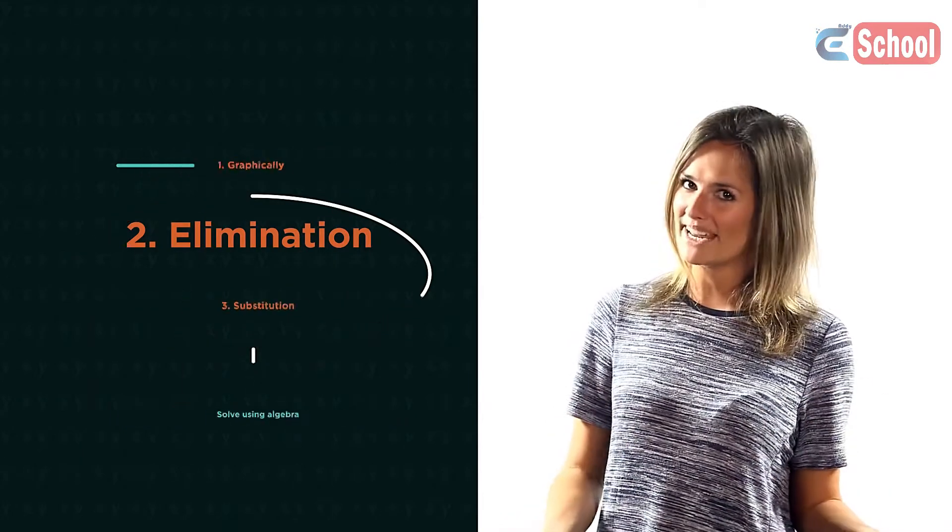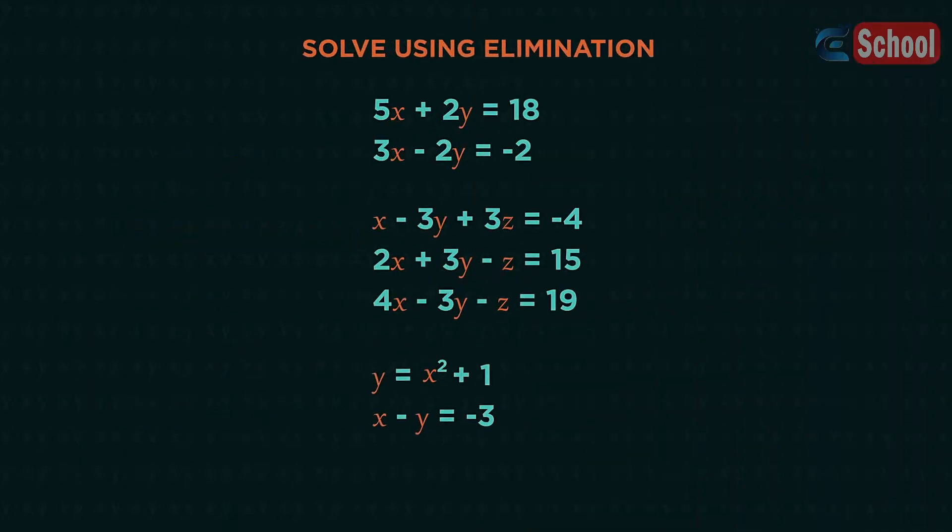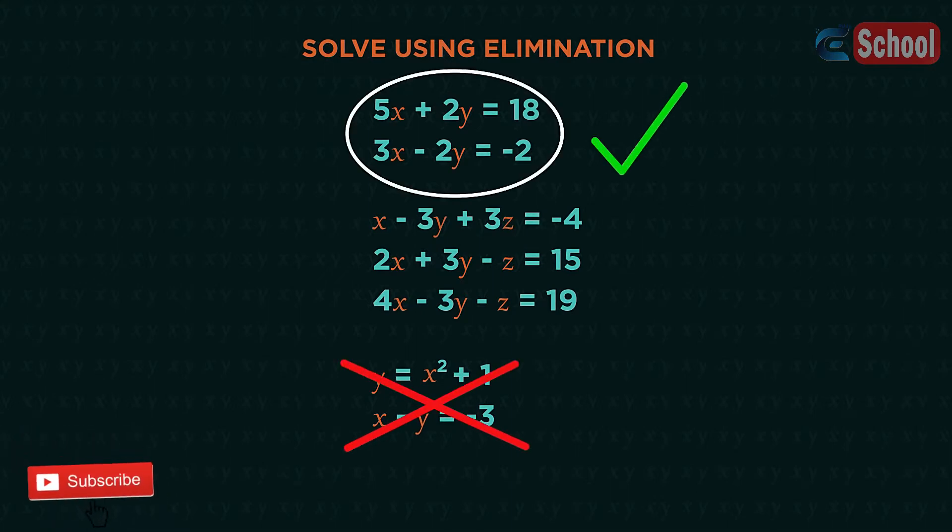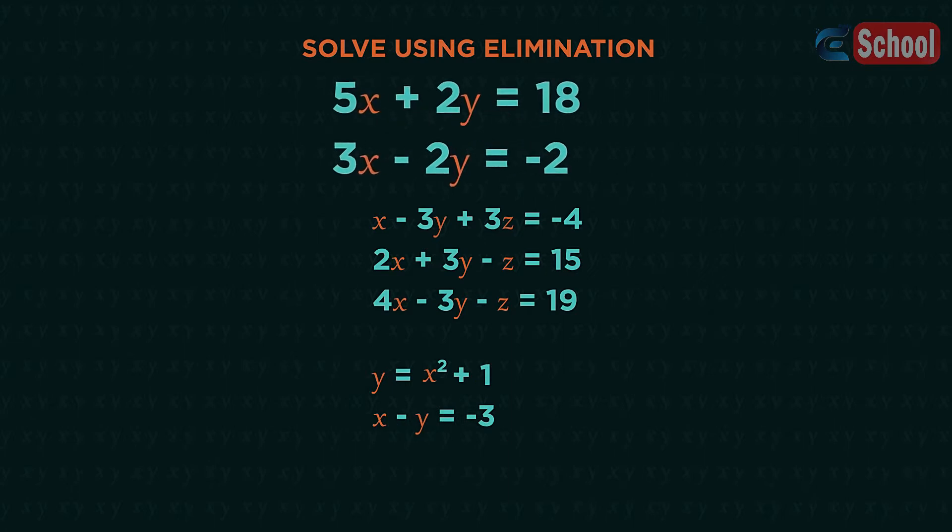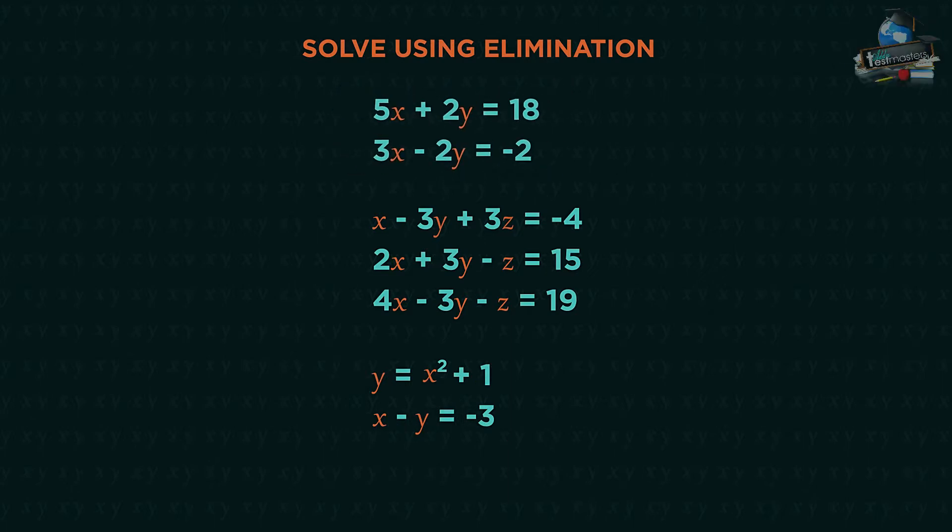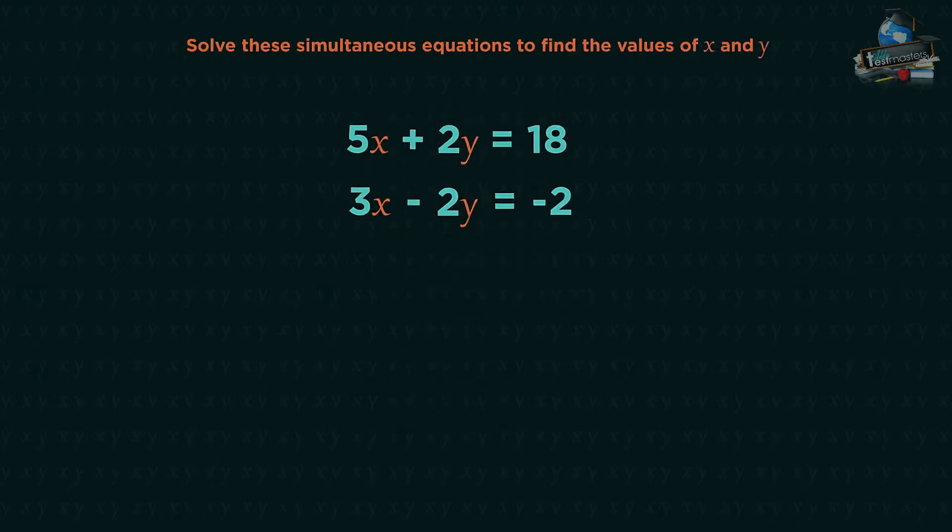The other two methods involve solving algebraically by elimination or by substitution. In this video we're going to discover how to use elimination. Solving simultaneous equations by elimination only works when we have linear equations, so equations that look like this with an x and a y, no x squareds or y squareds.